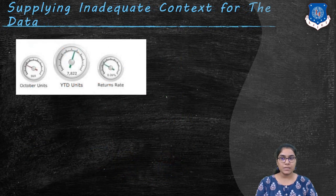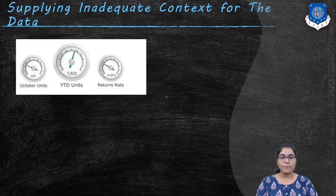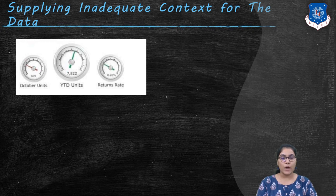The next design issue is supplying inadequate context for the data. As a means to monitor what's going on in the business, dashboards are usually populated predominantly with quantitative measures of what's currently going on. Measures of what's going on in the business, however, rarely do well as a solo act.